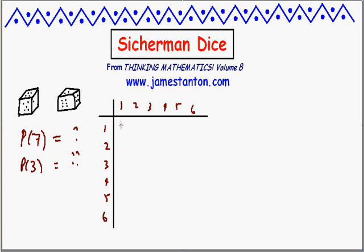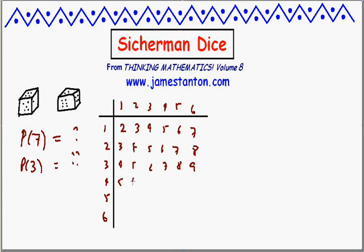And here are the possible sums. 1+1=2, then 3, 4, 5, 6, 7. Next row: 3, 4, 5, 6, 7, 8. Then 4, 5, 6, 7, 8, 9. 3+6=9, then 5, 6, 7, 8, 9, 10. Next: 6, 7, 8, 9, 10, 11. And finally 7, 8, 9, 10. Then 6+5=11, and 6+6=12.